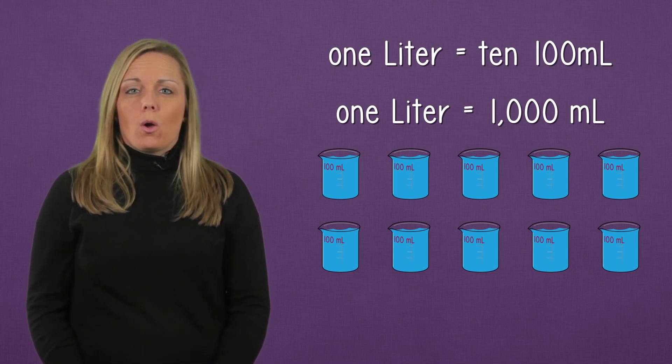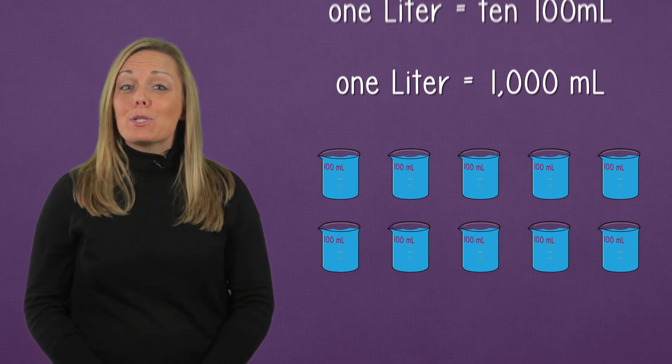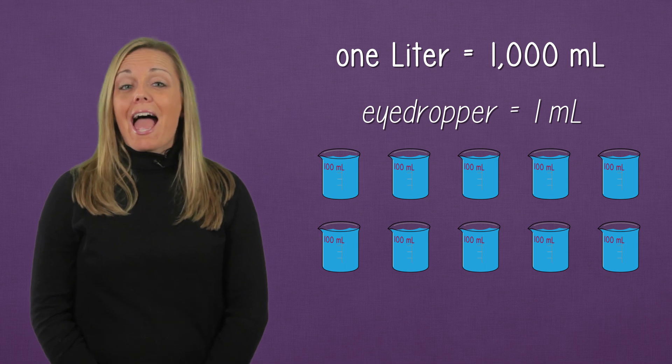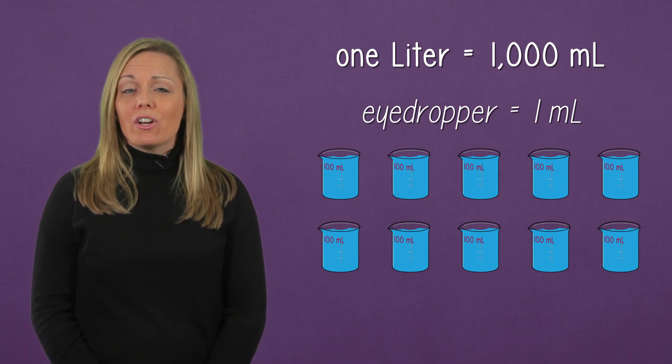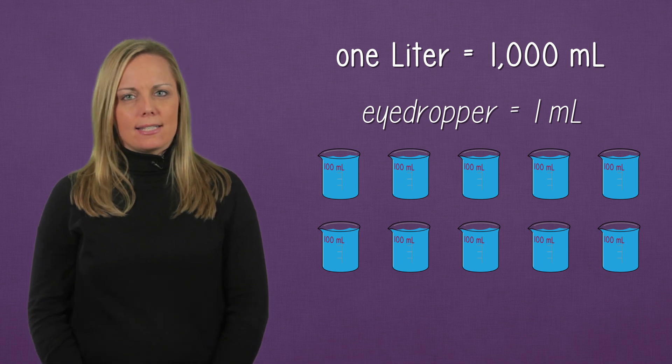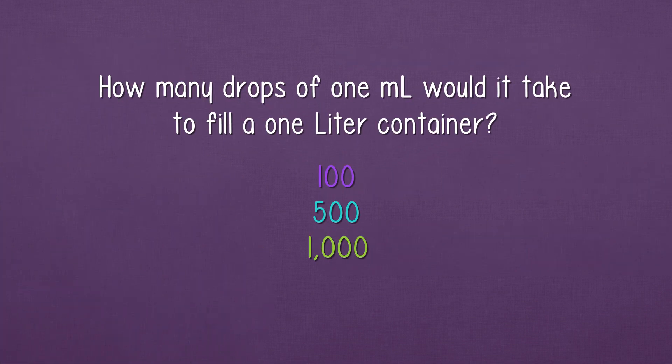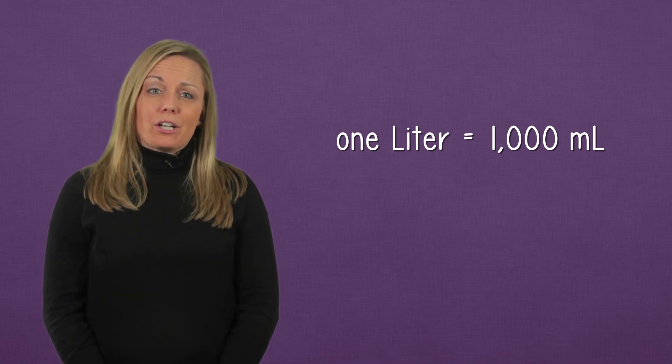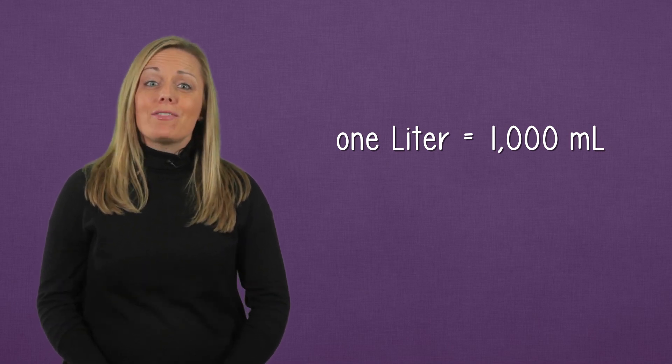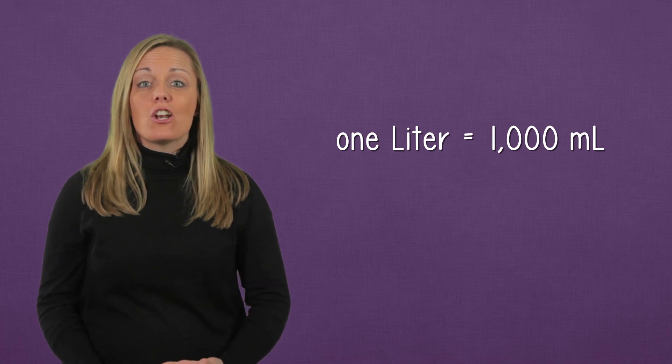So wait. When I was using the eyedropper, I was pouring 1 milliliter at a time. How many pours of 1 milliliter would it have taken to fill the 1 liter jar to capacity? We know that 1 liter is equal to 1,000 milliliters, which means it would have taken 1,000 drops.